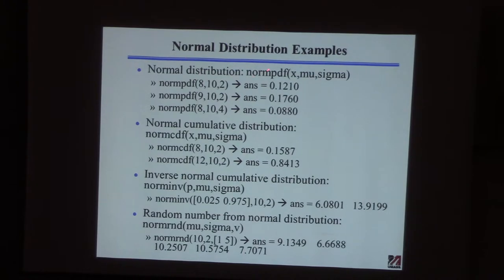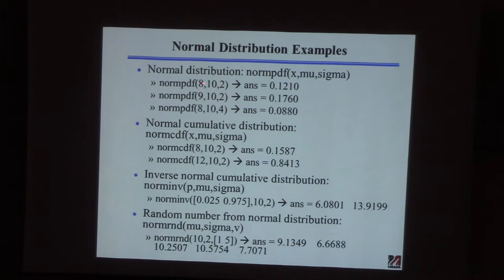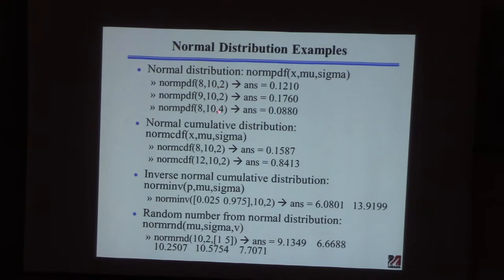For the normal PDF, you provide the value x you're interested in, the mean mu, and the standard deviation sigma, and it gives you back the probability. For a normal distribution with mean 10 and sigma 2, the probability of getting a value of 8 is lower than getting 9, which is about 18% — that makes sense because 9 is closer to the mean and the maximum probability occurs at the mean. If you increase the standard deviation to 4, the curve is broader, so the probability of any particular value is less — getting 8 drops to about 9%.